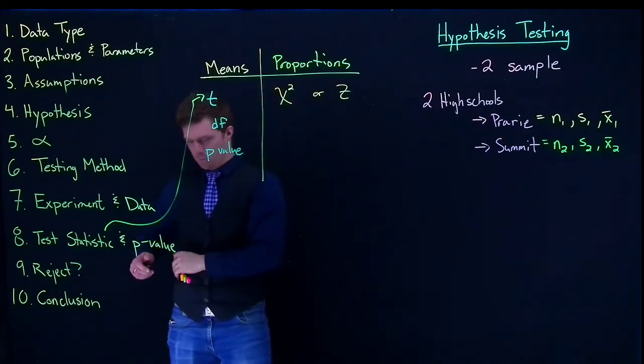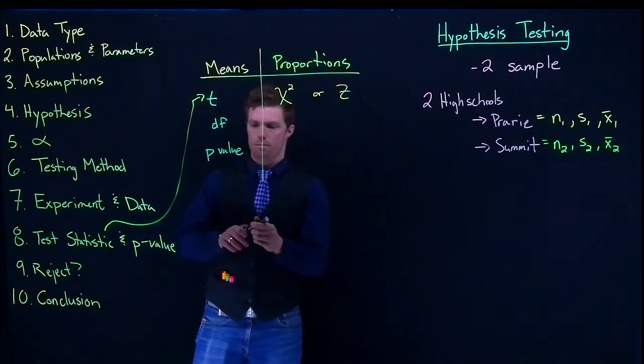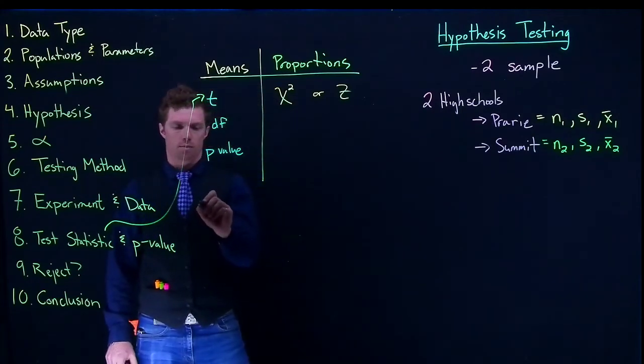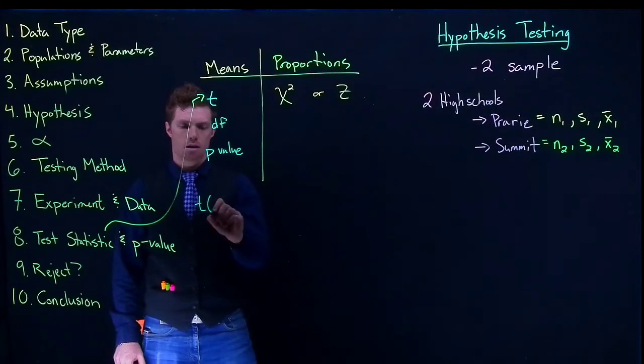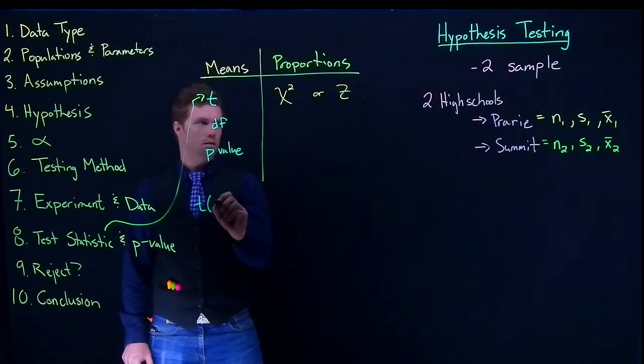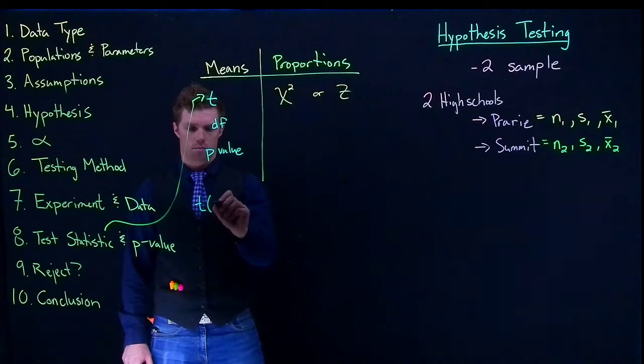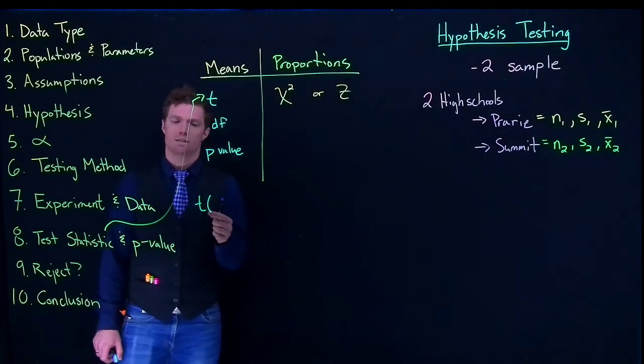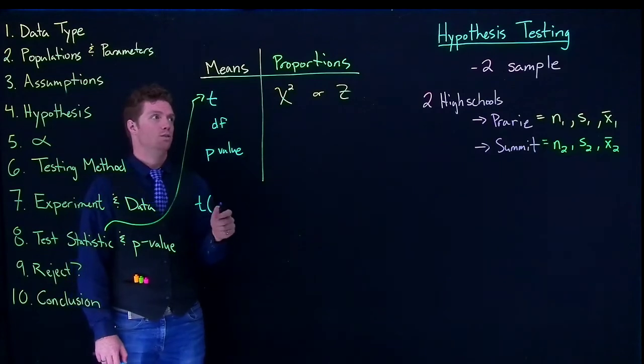So when we finally are reporting in our APA format for our means, we are going to be doing something like this where it says t, and then our degrees of freedom we put in whatever our calculated degrees of freedom are. It's not as easy as just the n minus one as it was with our original one sample hypothesis testing.